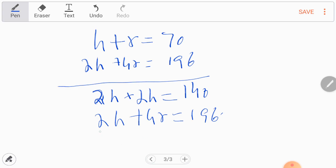And now, subtract. This is the line for separation. And here, we will subtract. It will yield minus 2r equals minus 56.